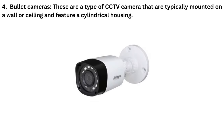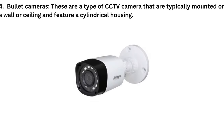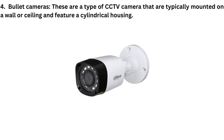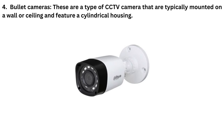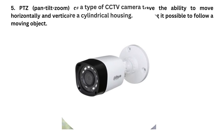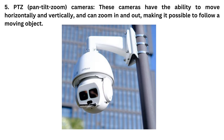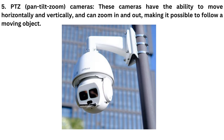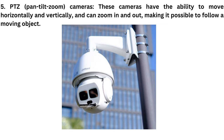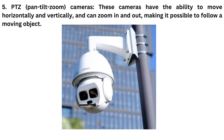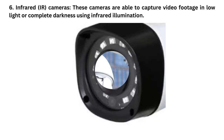4. Bullet cameras — these are a type of CCTV camera that are typically mounted on a wall or ceiling and feature a cylindrical housing. 5. PTZ cameras — these cameras have the ability to move horizontally and vertically, and can zoom in and out, making it possible to follow a moving object.